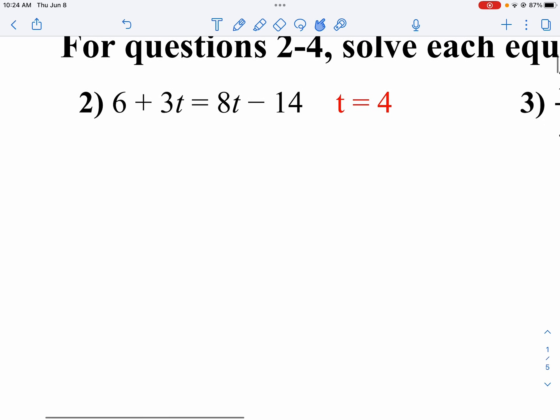On number two, let's move all our variables to one side first, because you can't simplify it. I'm going to move my smaller variable, because I don't want to work with negative numbers. So I'm going to subtract 3t from both sides.